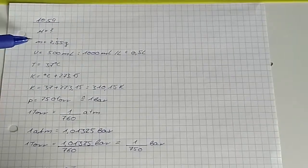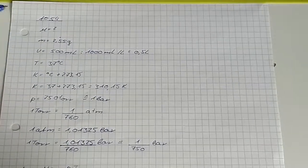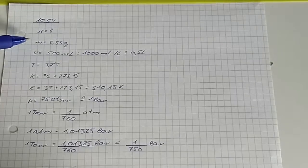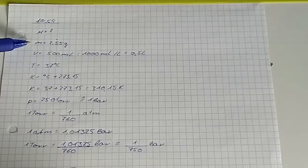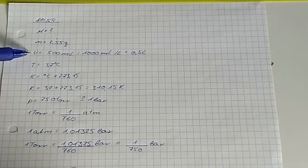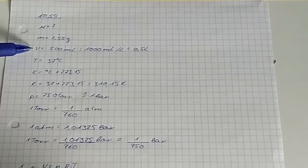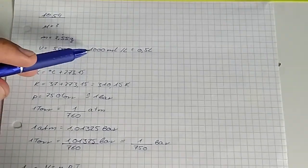First, we are transforming the units. The mass can stay as is. The 500 milliliters corresponds to a half-liter, with a conversion factor of 1000.